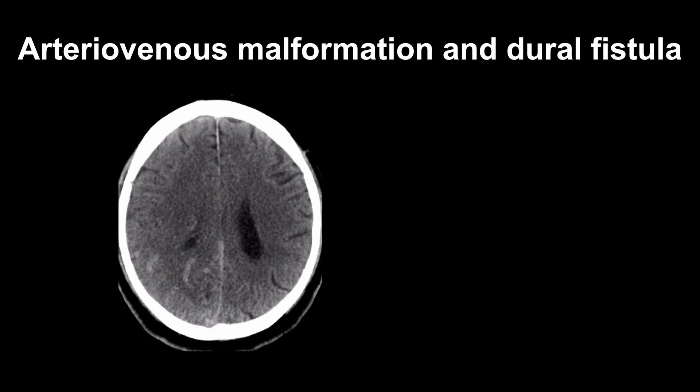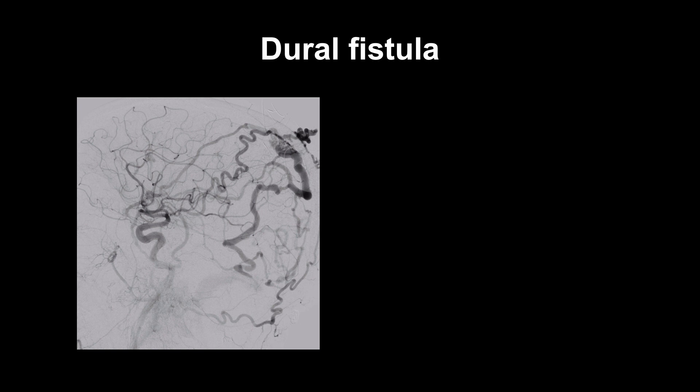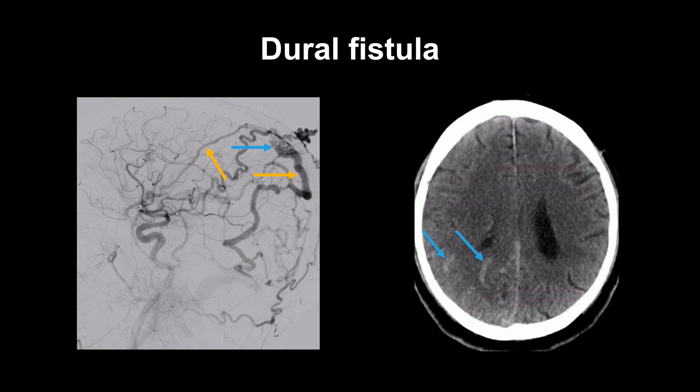While the findings in this case resemble subarachnoid hemorrhage, notice that the high attenuation appears to be within the brain itself rather than the cortical sulci. That finding suggests these are abnormally enlarged blood vessels associated with a vascular malformation rather than intracranial hemorrhage. Normal intravascular flowing blood will look whiter than normal brain due to its higher attenuation in patients without anemia. The catheter angiogram in this patient demonstrated a dural fistula with large draining veins, accounting for the abnormal vessels seen on the non-contrast CT scan.